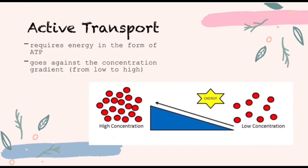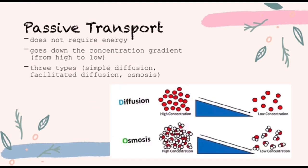Active transport occurs when substances require energy in the form of ATP to move against a concentration gradient — that is, from lower to higher concentration. While in passive transport, substances move down the concentration gradient from higher to lower concentration without the usage of energy.